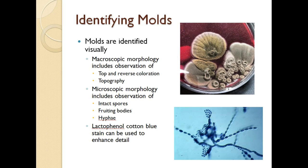When we begin to identify a mold, we first just look at it. Macroscopic morphology includes observations of the top coloration and the reverse coloration if it's growing on an agar dish — sometimes it will be gray or gray-green on top but black on the bottom. After describing its morphology using terms found in your lab manual, we then look at it microscopically. We want to look at intact fruiting bodies and spores, since finding spores alone won't help us identify the mold. We also want to see whether the hyphae are septate or aseptate. The stain used in mycology is lacto-phenol cotton blue, which enhances detail with a blue color.